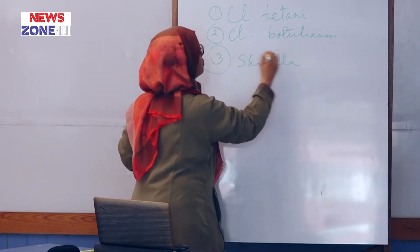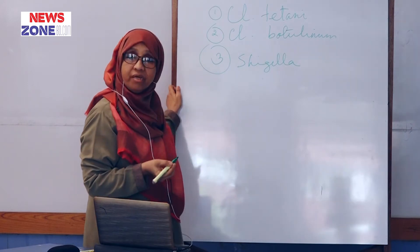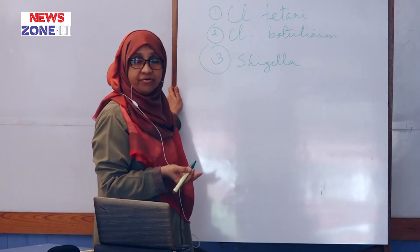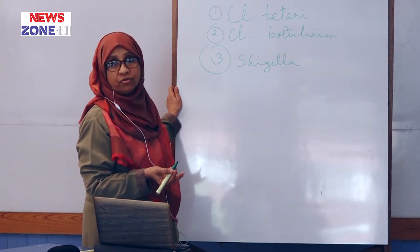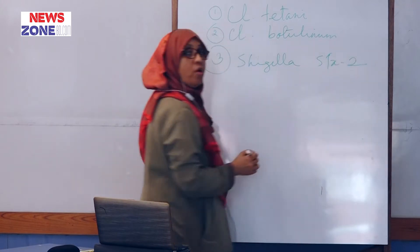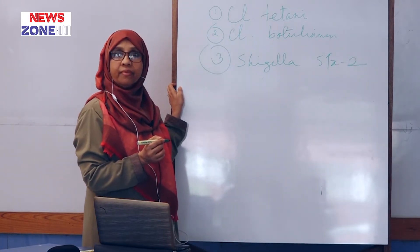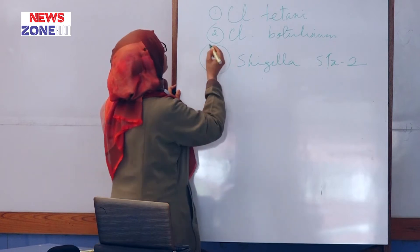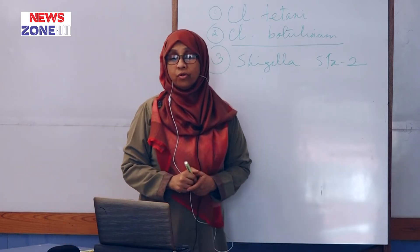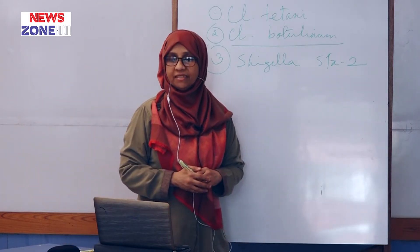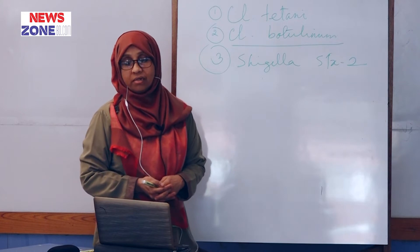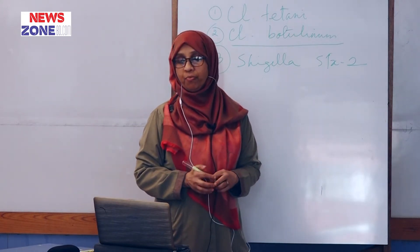Shigella produces toxin which acts in three mechanisms. First, it causes watery diarrhea, then bacillary bloody dysentery, and then also it may act as neurotoxin because Shigella toxin type two can act as neurotoxin. We are today going to discuss about Clostridium botulinum and its toxin. Clostridium botulinum is an anaerobic gram-positive bacilli and causes a very deadly poison that may cause death from botulinum food poisoning.